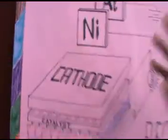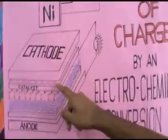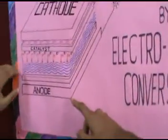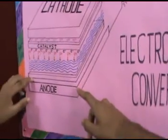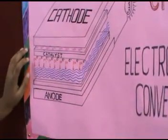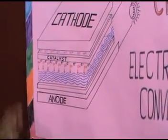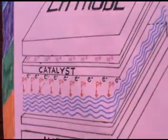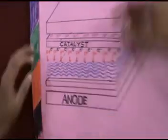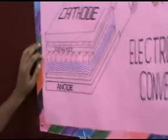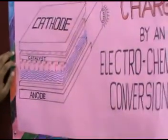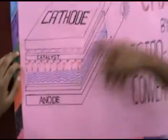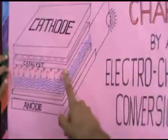We know that during electrolysis, H⁺ ions are produced near the cathode and OH⁻ ions are produced near the anode. The secret is that H⁺ ions and OH⁻ ions have a tendency to bond with each other to create water. But there is an obstruction — the obstruction is the electrolyte.